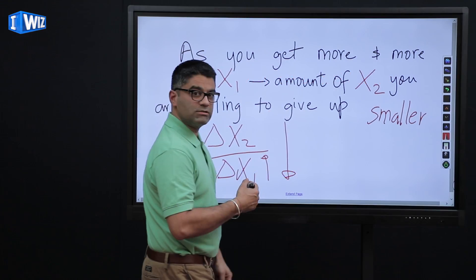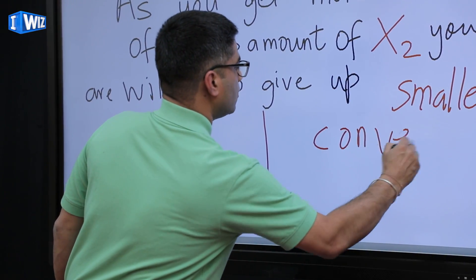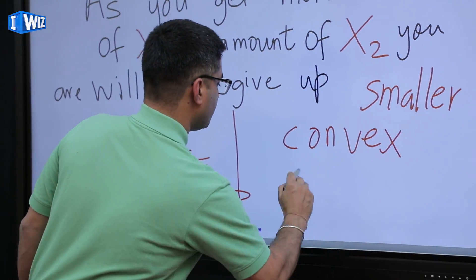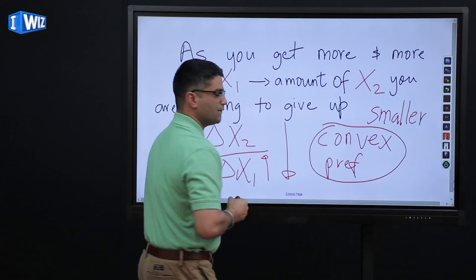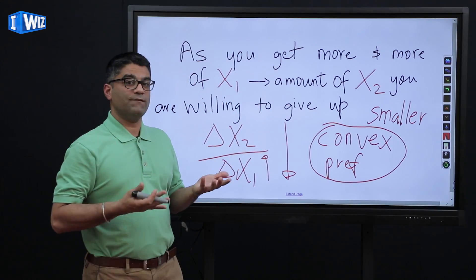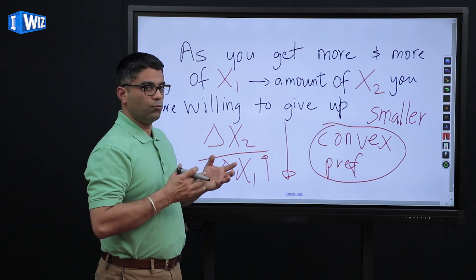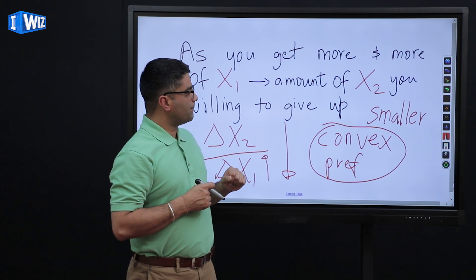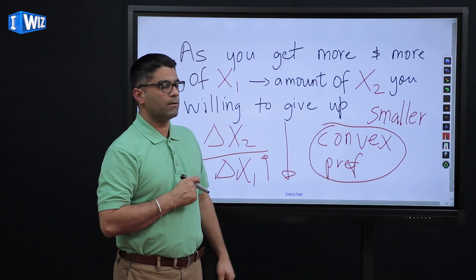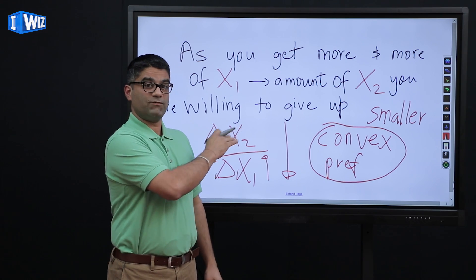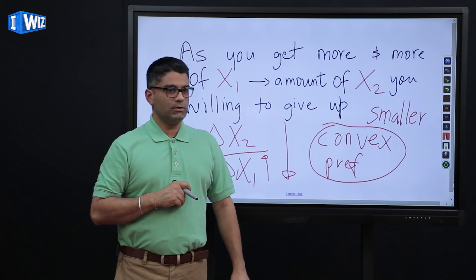These preferences for consumers are also referred to as convex preferences, to model the fact that we like to have some of both goods and not just a lot of one. Let me do another example because this is a very important concept. In the next video we're going to graph this concept, so I'm going to leave you with one more example.